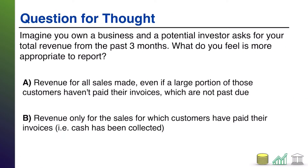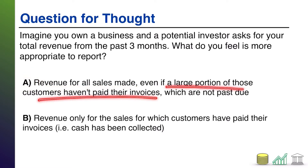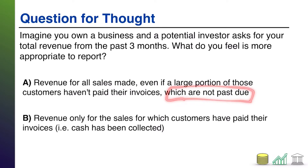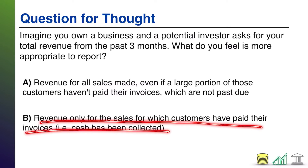I'd like to start off this video with a question for you to think about. If you own a business and a potential investor wants to know what is your total revenue for the past three months, which of these options do you feel is more appropriate to report to them? Option one: revenue for all the sales you've made, even if you have not collected a large portion of the cash for those sales yet — not because customers don't look like they're going to pay, but simply because the invoices haven't come due. Or B: revenue only for the sales for which the customers have paid you — in other words, cash collected.